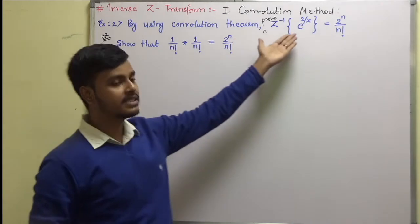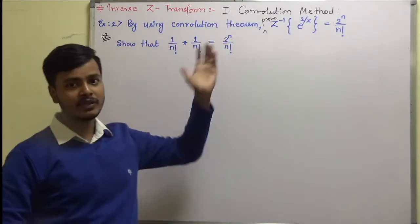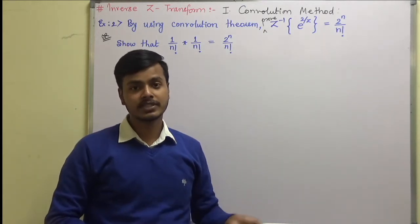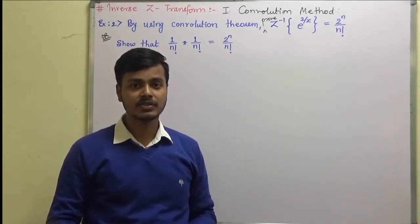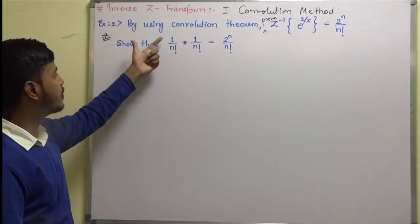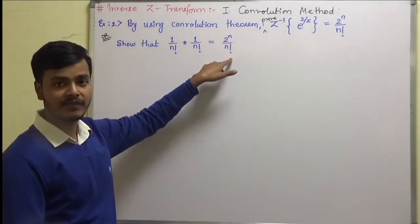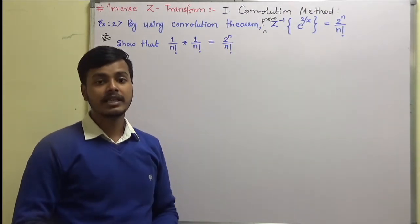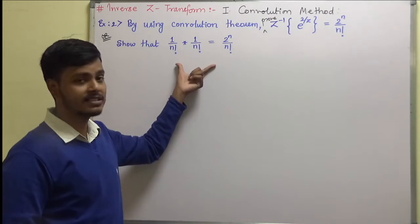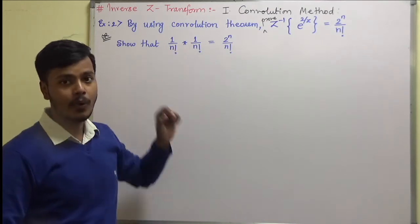If the first statement is written, it is well understood that we have to make use of the convolution theorem. We will adopt the procedure from the first example. If the equation is asked as: show that 1/n! convolution with 1/n! is 2^n/n!, then we know we have to use the convolution theorem. That is understood by this convolution operator.